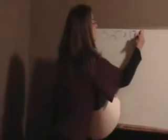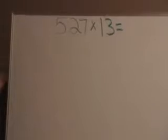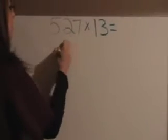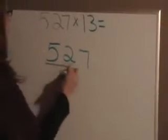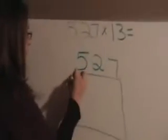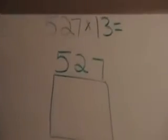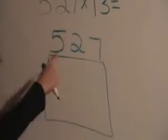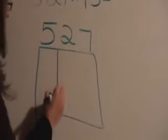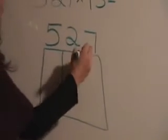So we have 527 times 13. The first step in multiplying using the lattice multiplication is writing your first number across the top of what we are going to create, which is a box. Then you need to draw lines between each of the numbers. So between the 5 and the 2, draw a line going down. And between the 2 and the 7, we can also draw a line going down. Your box doesn't have to be perfect, so don't worry about neatness.